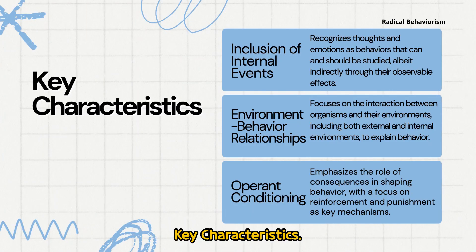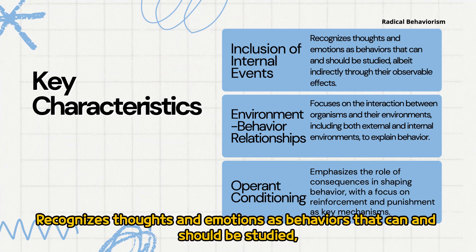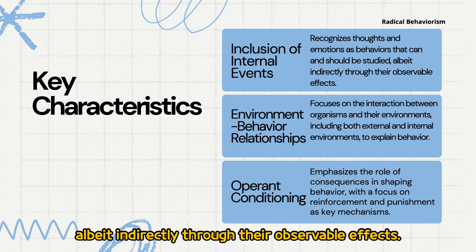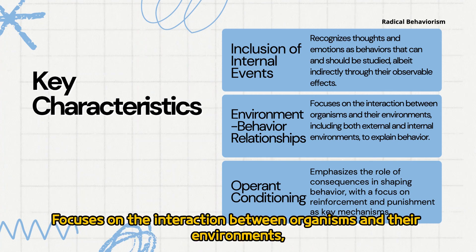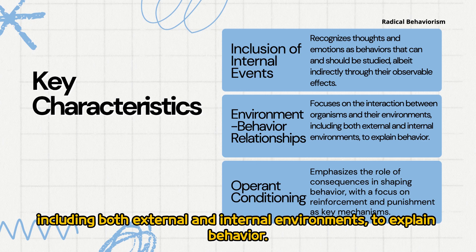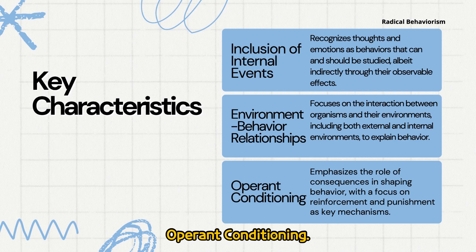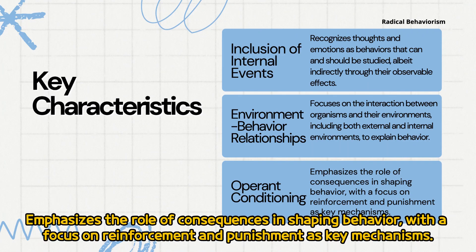Key characteristics of radical behaviorism include the inclusion of internal events — recognizing thoughts and emotions as behaviors that can and should be studied, albeit indirectly, through their observable effects. It focuses on environment-behavior relationships, including both external and internal environments. It also emphasizes operant conditioning — the role of consequences in shaping behavior, with reinforcement and punishment as key mechanisms.